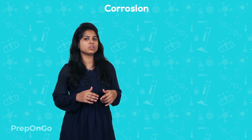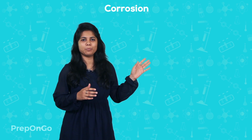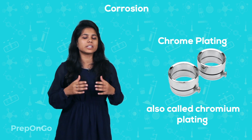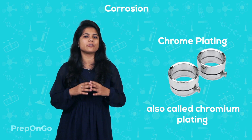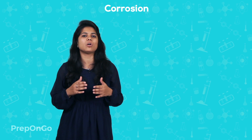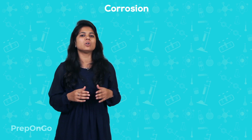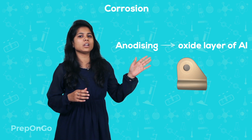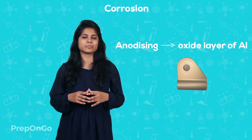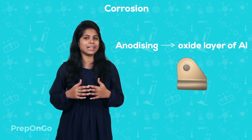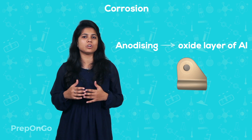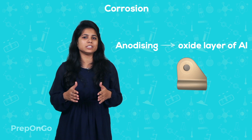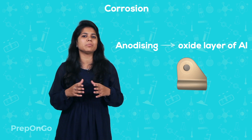The second technique is chrome plating, also called chromium plating. It is a technique through which a thin layer of chromium is electroplated on the metal. Anodizing is another method of forming an oxide layer of aluminium. This aluminium oxide layer prevents further corrosion of the metal, and we can also put dyes on this oxide layer to give it an attractive look.